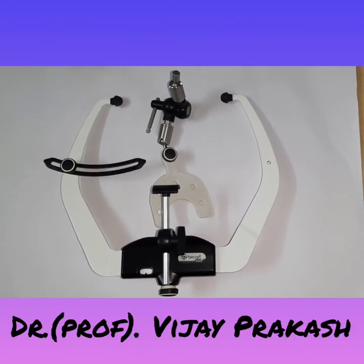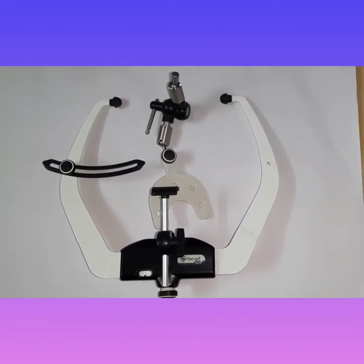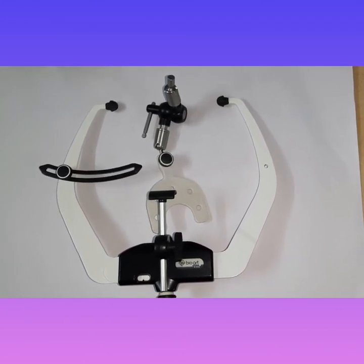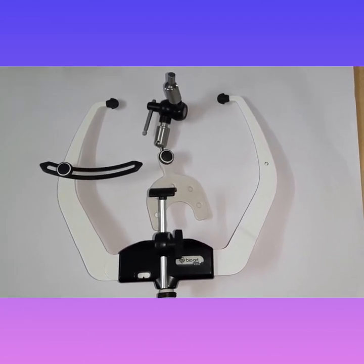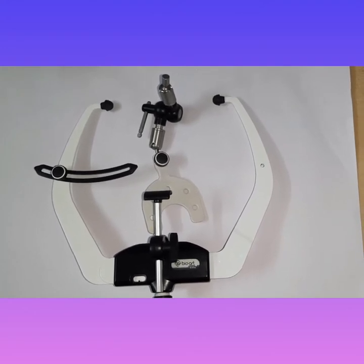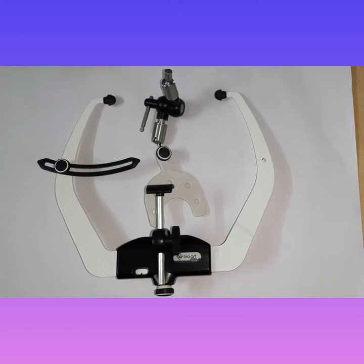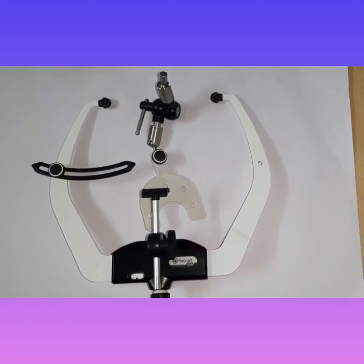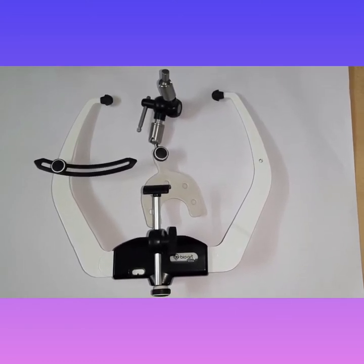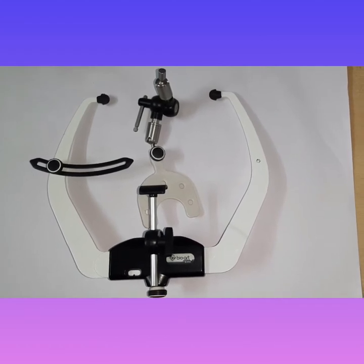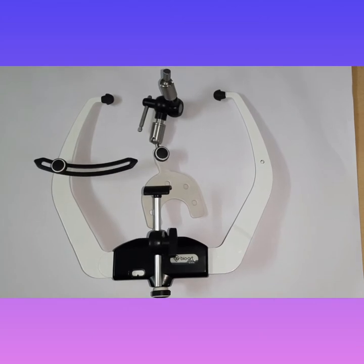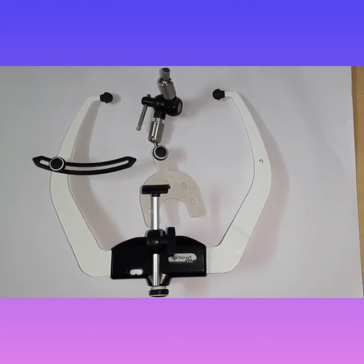So what do you mean by a face bow? By definition, a face bow is a caliper-like device which is used to record the spatial relationship of the maxillary arch to some anatomic reference points, and then transfer this relation to the articulator, or it orients the dental cast in the same relationship to the opening axis of the articulator. This is the definition according to the Glossary of Prosthodontic Terms.